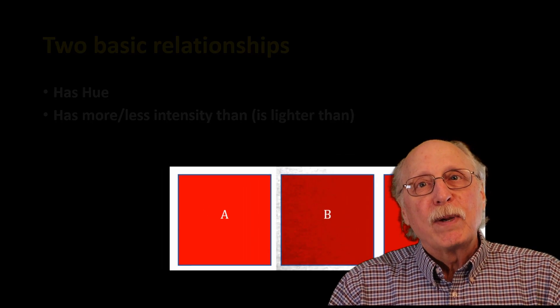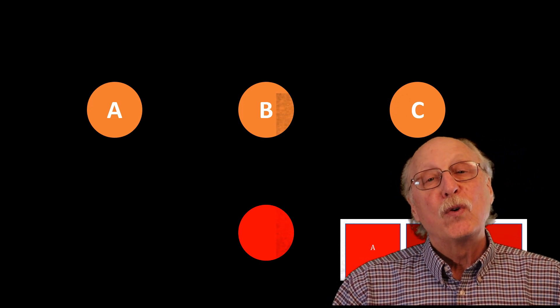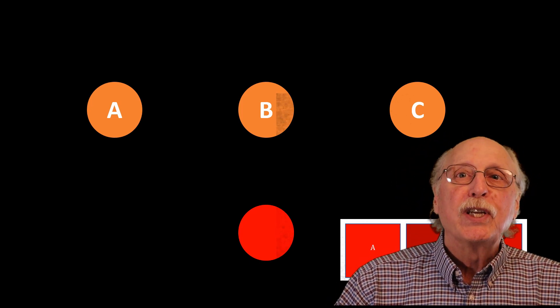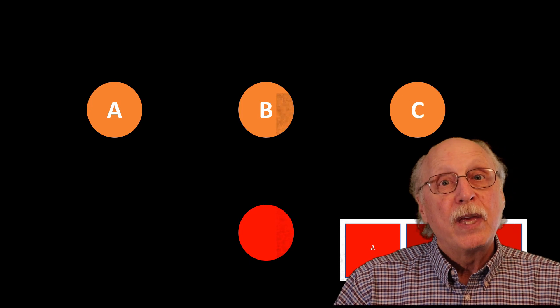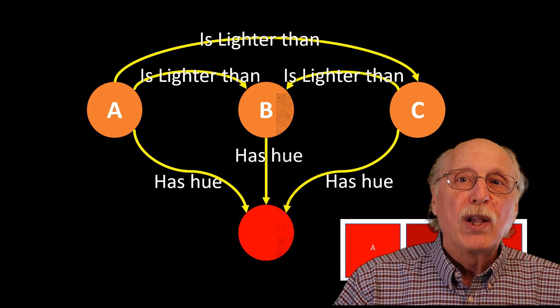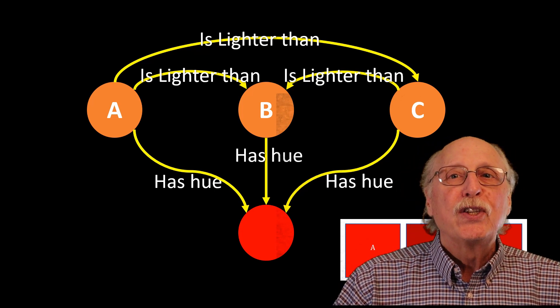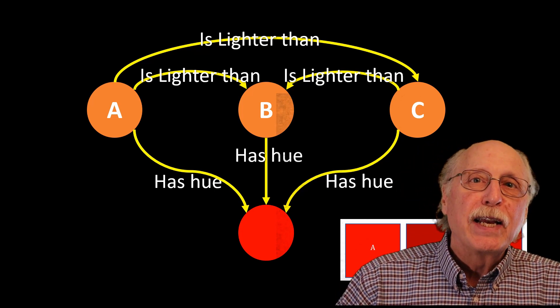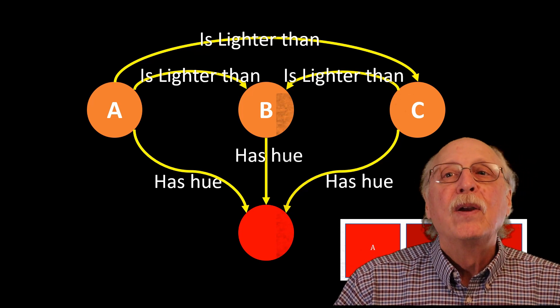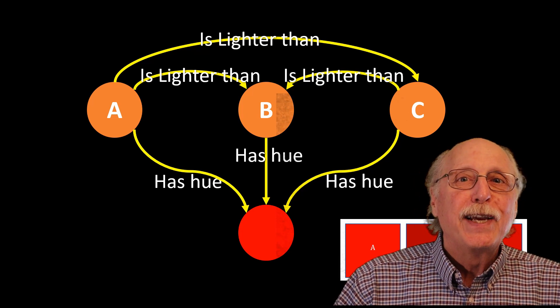Here's how we might represent this information in a graph. We have the nodes A, B, and C and another node representing the color red. Then we add edges indicating that A, B, and C all have the same hue of red. And then we add more edges to store the facts that A is lighter than C and lighter than B, while C is lighter than B but not lighter than A.